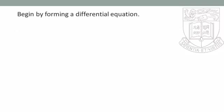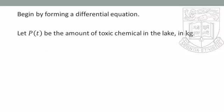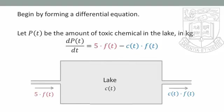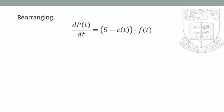We begin by forming a differential equation. Let P(t) be the total amount of toxic chemical in the lake in kilograms. The rate of change in P equals the amount of chemical entering minus the amount leaving. The amount entering the lake is 5 × F(t), and the amount leaving is C(t) × F(t), where C(t) is the concentration of chemical in the lake. Therefore, dP/dt = 5·F(t) - C(t)·F(t). Rearranging, we get dP/dt = (5 - C(t))·F(t).